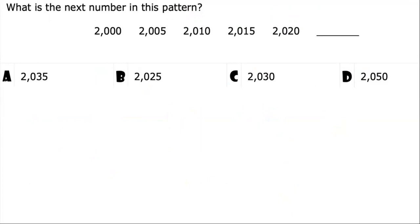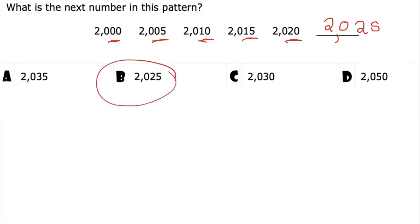Now let's look at this next number pattern. These numbers look relatively large, but if you look carefully, there's not much difference between the thousands and hundreds place in either of these numbers. The change happens in the tens and ones place, so we're only going to focus on the tens and ones place. Looking at the tens and ones place, I see the pattern 0, 5, 10, 15, 20, which means the next number in this pattern should be 25. Because the beginning of the pattern starts with 2000, I'm going to assume the remaining pattern starts with 2000, which means the correct answer is B.